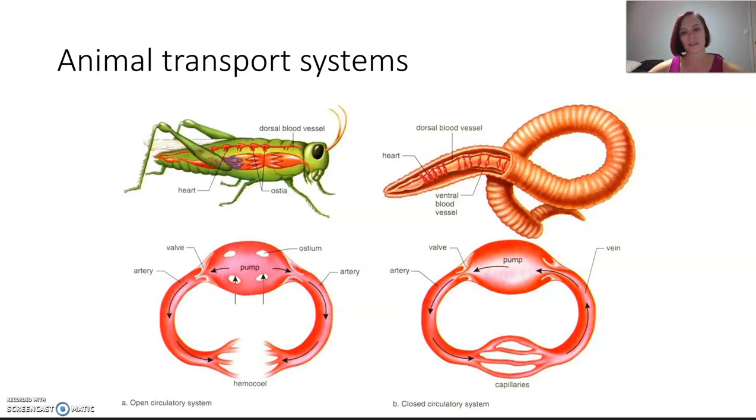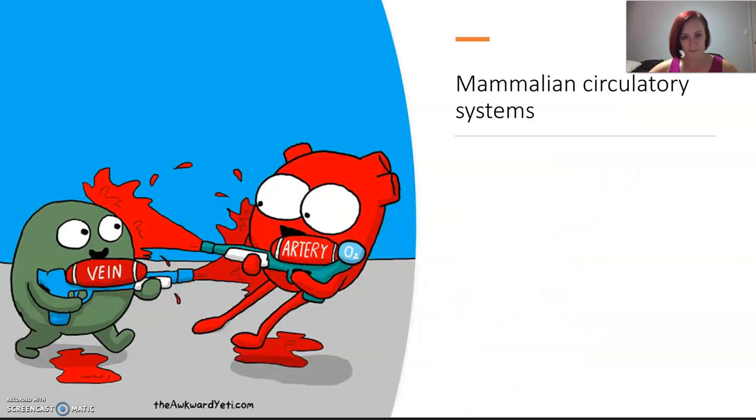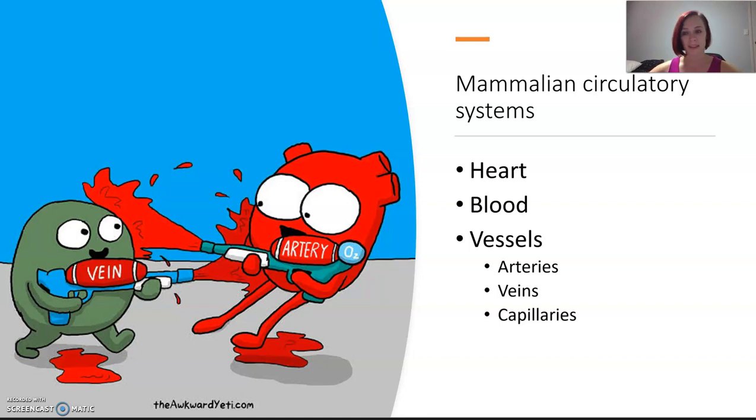We are going to focus on mammalian transport systems particularly. In the mammalian circulatory system, we are talking the heart, the blood, and the vessels. They are our main components. It's very complex, but it boils down to just these. I could talk for an entire term on this system, so remember this is just an overview.